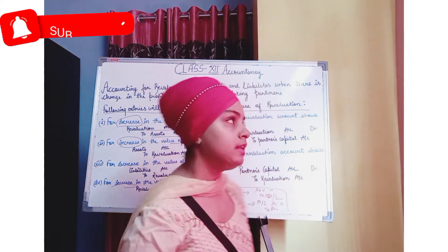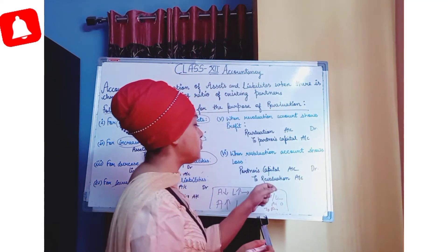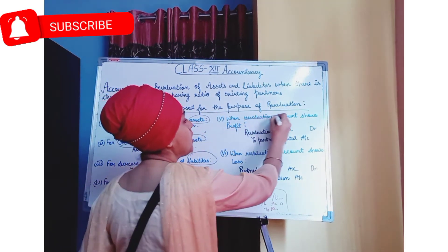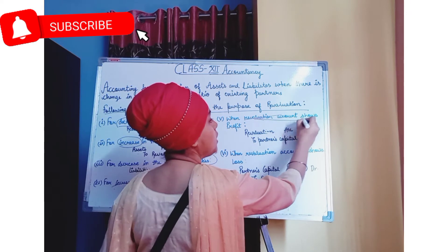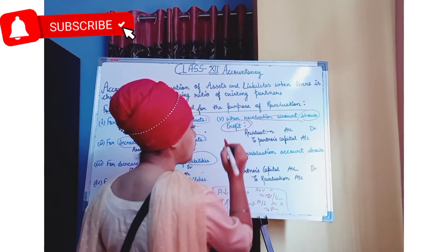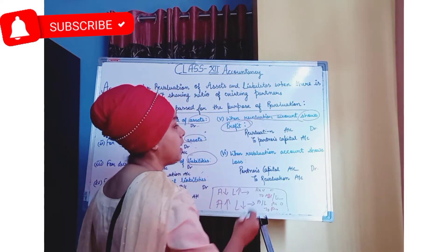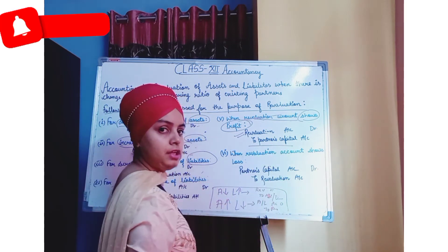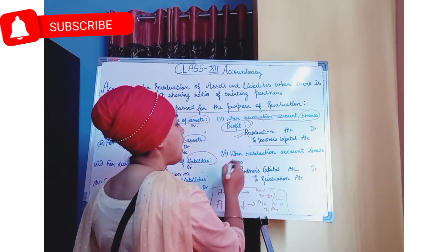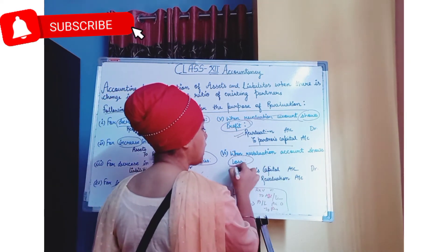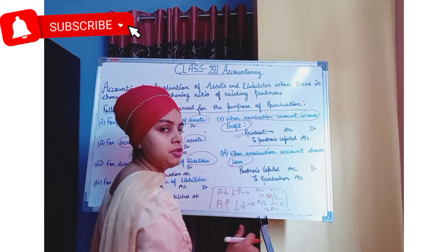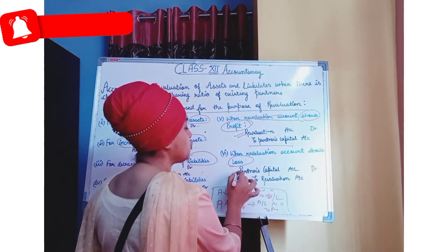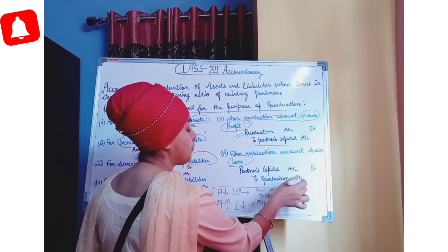The last two entries are the closing entries. When we show a profit in the Revaluation account, the entry is: Revaluation Account Debit, To Partners' Capital Accounts. If we show a loss, then the entry is: Partners' Capital Accounts Debit, To Revaluation Account.